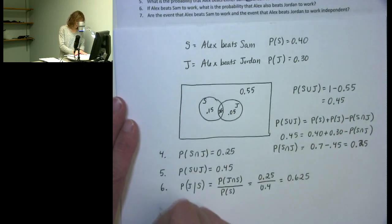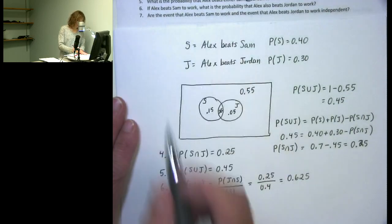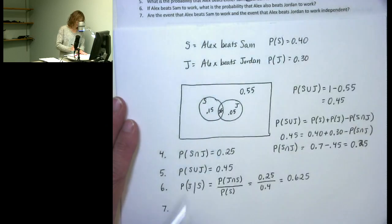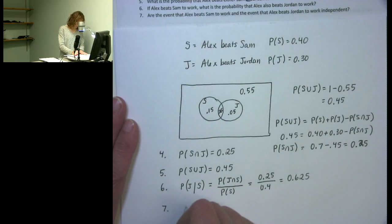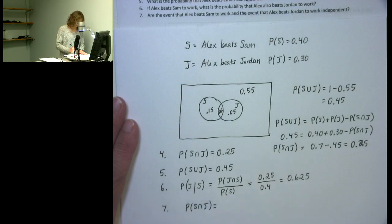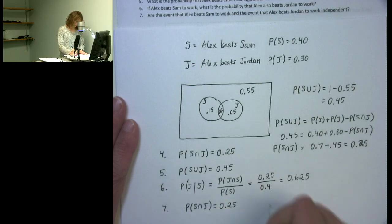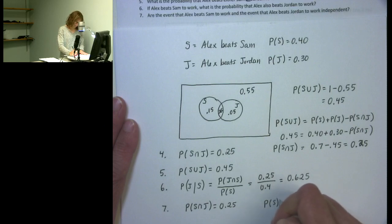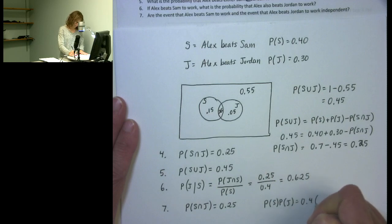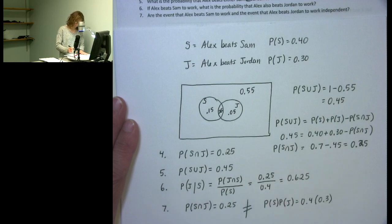Question 7 asks: are the events that Alex beats Sam to work and Alex beats Jordan to work independent? To check, I verify whether the probability of the intersection equals the product of the individual probabilities. Since these are not equal, they are not independent.